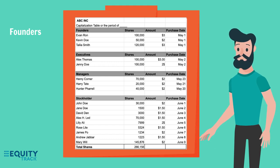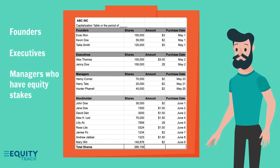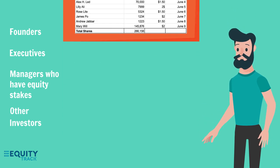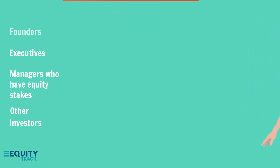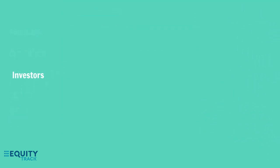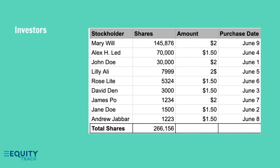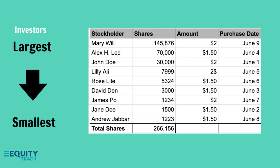Then, you may want to include your executives, managers who have equity stakes, and other investors. For further analysis, you may decide to arrange your investors in descending order — include your largest investors at the top, then have the table descend from biggest to smallest.